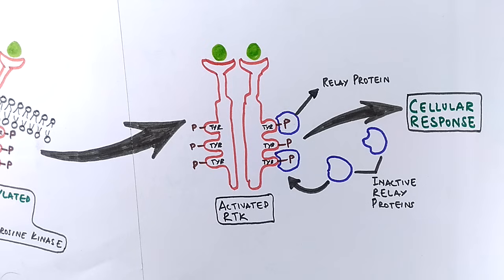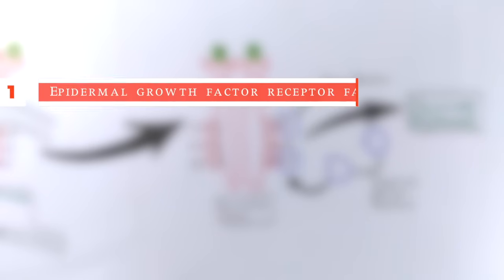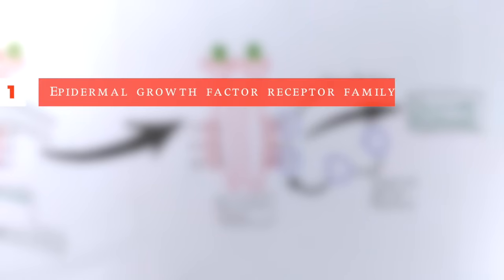These RTKs are a large family of receptors which include the following major receptors. First is the epidermal growth factor receptor family. This is associated with signaling in the nervous system, as its insufficiency in signaling has been related to neurodegenerative diseases.